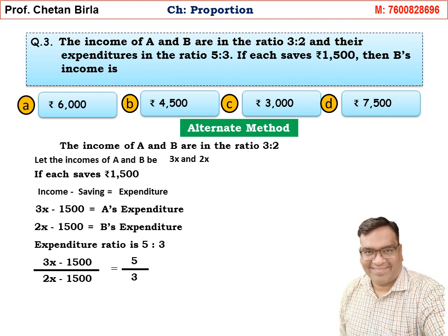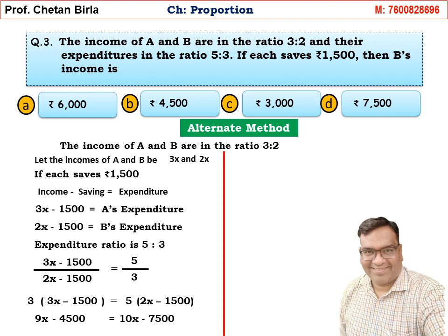Cross multiplying: 3(3x − 1500) = 5(2x − 1500). Opening brackets: 9x − 4500 = 10x − 7500. Transferring terms: 7500 − 4500 = 10x − 9x, so 3000 = x. Therefore x = 3000.